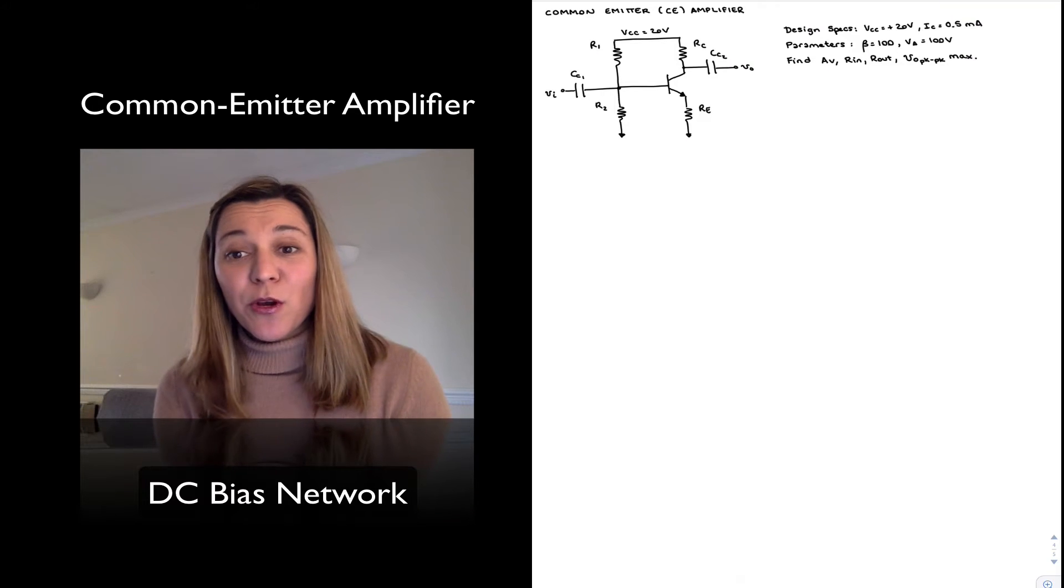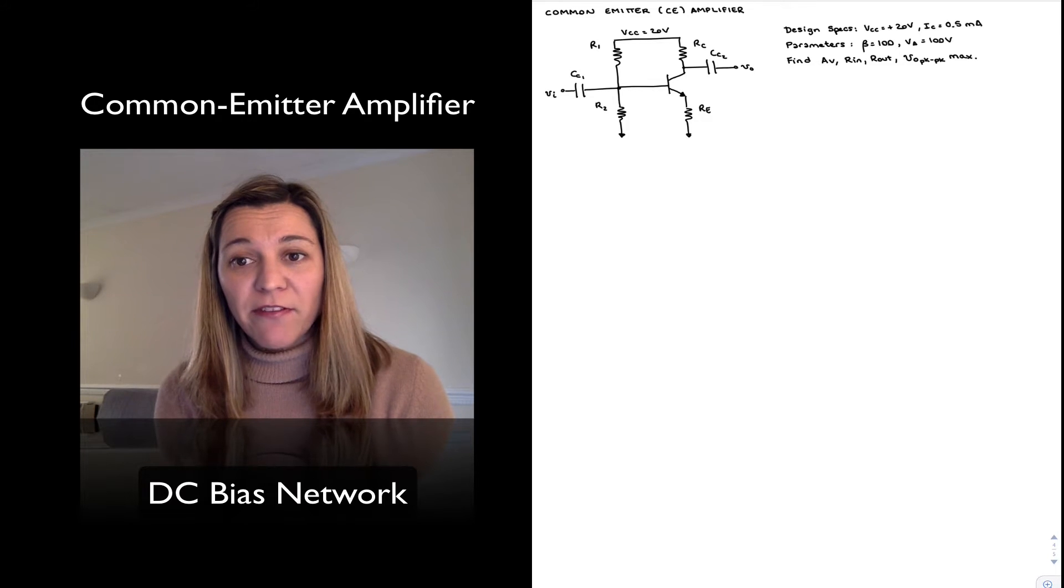Hello. We're going to be talking about single transistor BJT amplifiers and the first example of that we're going to see is the common emitter amplifier or CE amplifier.